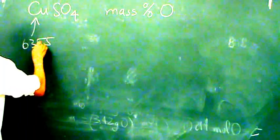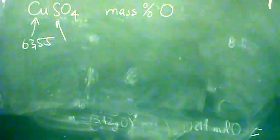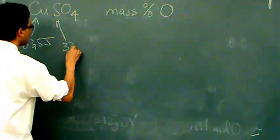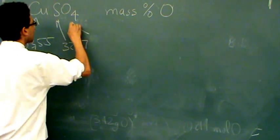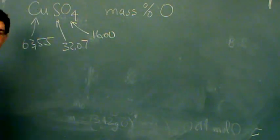So let's just write those down. Copper is 63.55. Sulfur is 32.07. And oxygen is 16.